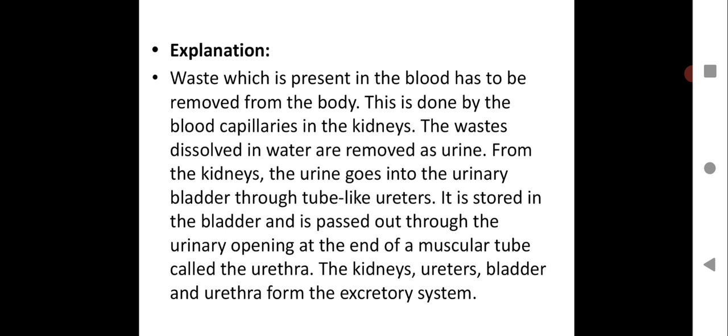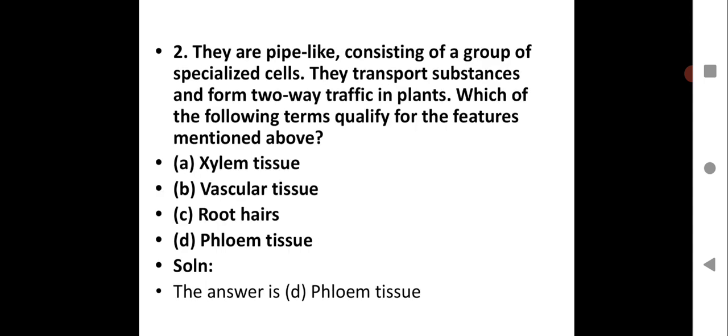Question number two - They are pipe-like consisting of a group of specialized cells. They transport substances and form two-way traffic in plants. Which of the following terms qualify for the features mentioned above - option A xylem tissue, option B vascular tissue, option C root hairs, option D phloem tissue.